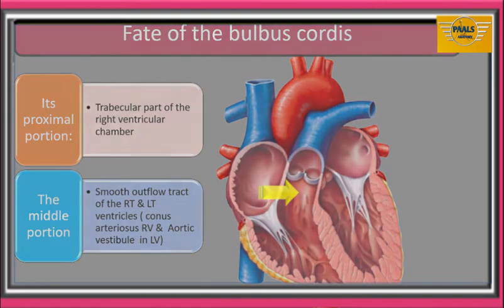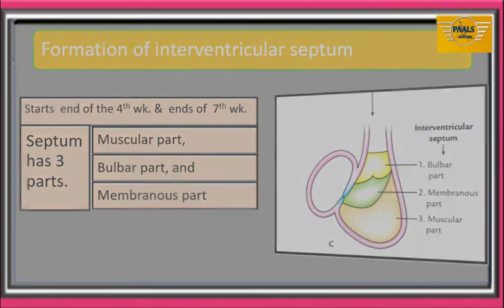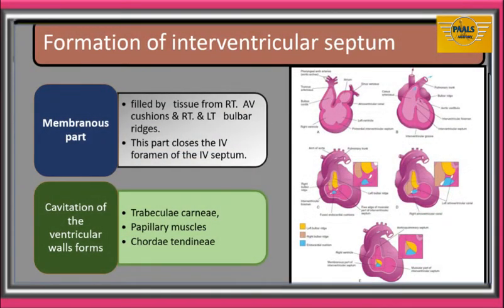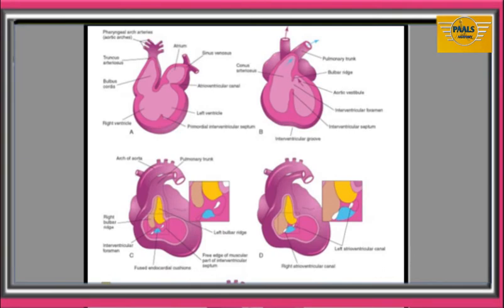We will now consider the formation of the interventricular septum. This process starts by the end of the fourth week and will be completed by the end of the seventh week with the closure of the interventricular foramen. The interventricular septum is made up of three parts: the muscular part, the bulbar part, and the membranous part, each developing from three different sources. The muscular part develops from the floor of the ventricle — a muscular ridge grows upward from the floor of the primitive ventricle near its apex, growing up to the level of the septum intermedium.